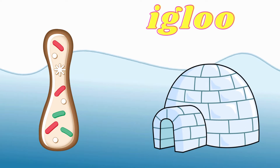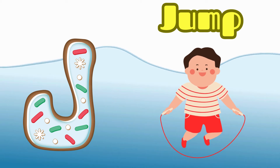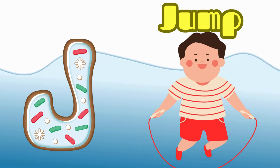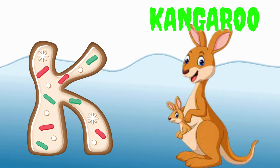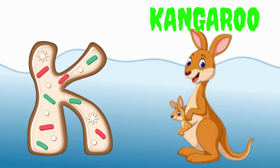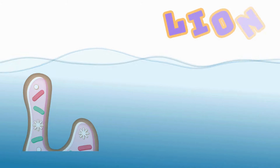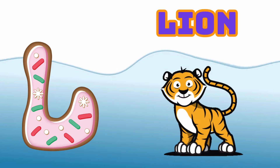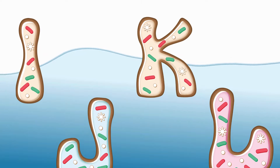I is for Igloo, I-I-Igloo. J is for Jump, J-J-Jump. K is for Kangaroo, K-K-Kangaroo. L is for Lion, L-L-Lion.